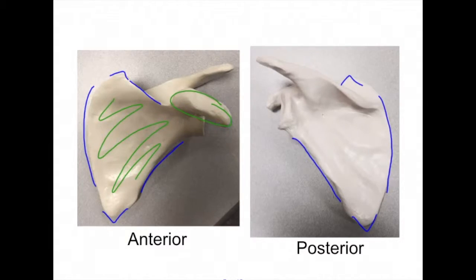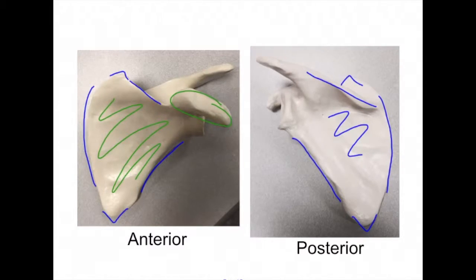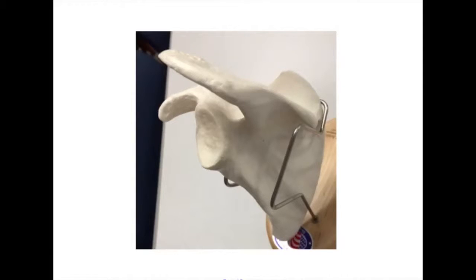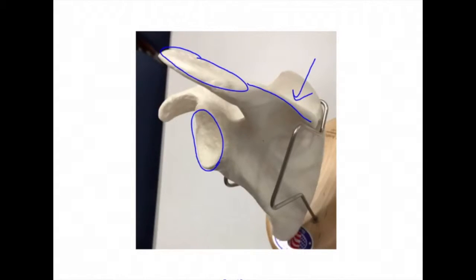Looking at the posterior side, we have our infraspinous fossa located here. This is our spine of the scapula. Above the spine, we have the supraspinous fossa located here. The spine continues to become the acromion process. Looking at the lateral aspect of the scapula, we can identify the glenoid cavity. We can also see the supraspinous fossa, the spine of the scapula leading to the acromion process, and the coracoid process.